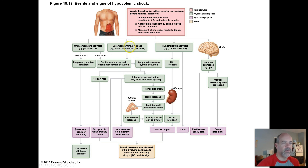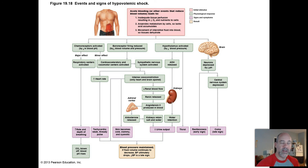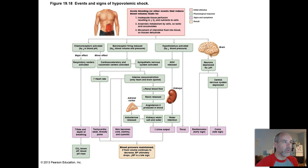Let's follow one example. If a patient is experiencing bleeding, the baroreceptors are going to detect that reduced blood pressure. The cardiovascular control centers in the medulla are going to respond by increasing sympathetic nervous system activity. Cardioacceleratory nerves will stimulate the heart, and the vasomotor center will send increased signals to blood vessels so they will constrict. That increased sympathetic activity is going to lead to an increased heart rate, so what you would observe in your patient is tachycardia.